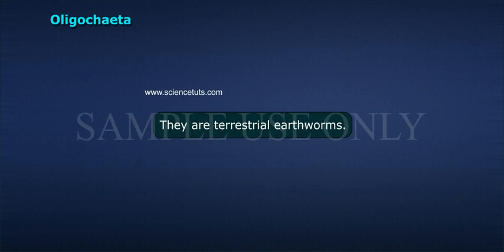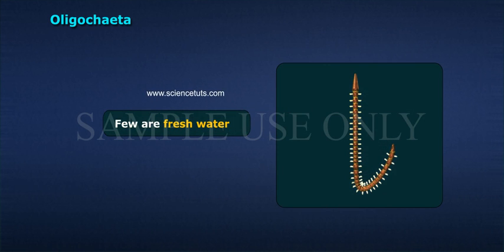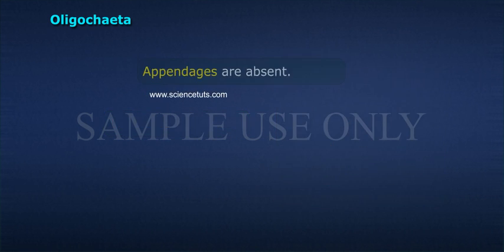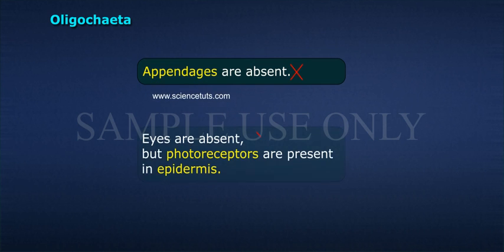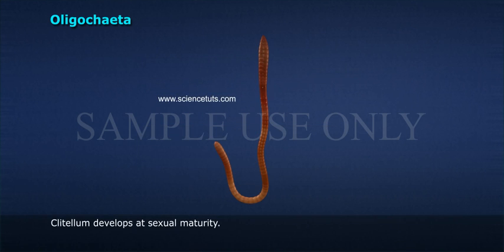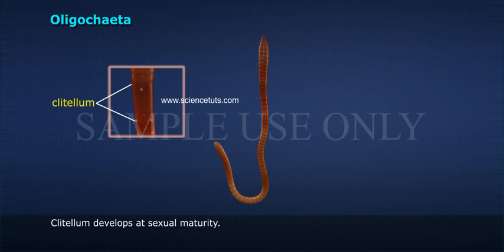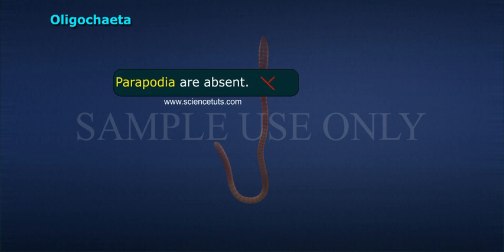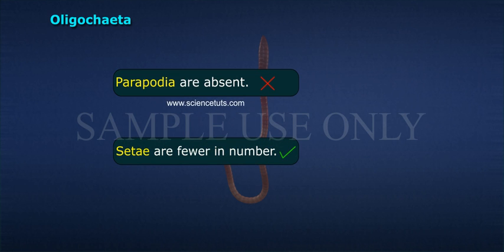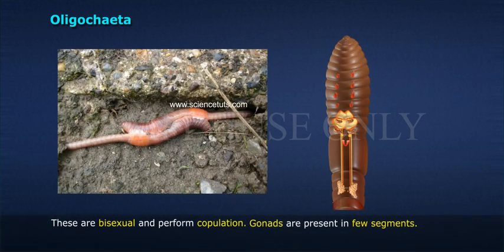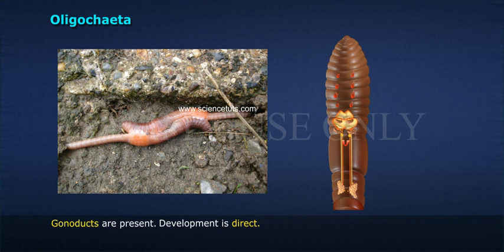Oligochaeta are primarily terrestrial earthworms, with fewer freshwater and marine species. Appendages are absent; eyes are absent but photoreceptors are present in the epidermis. The clitellum develops at sexual maturity. Parapodia are absent and setae are fewer in number. They are bisexual and perform copulation. Gonads are present in few segments, gonoducts are present, and development is direct. Examples include Pheretima.